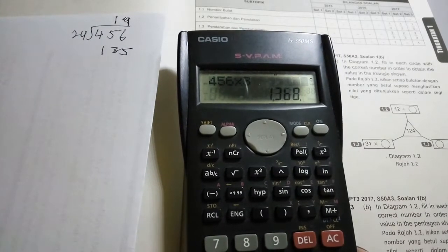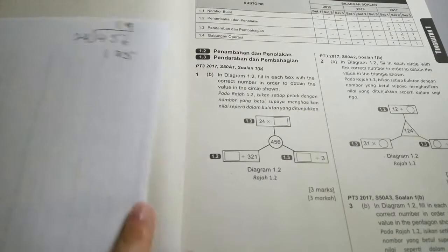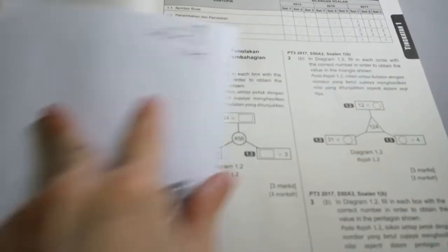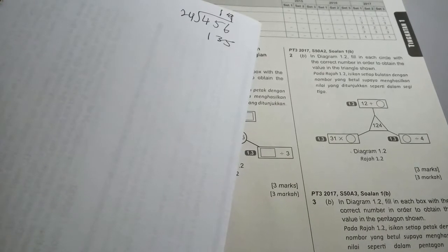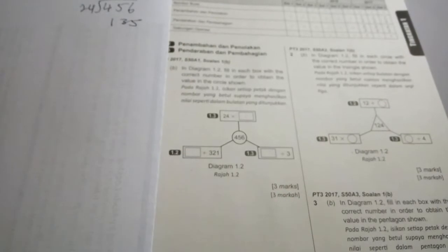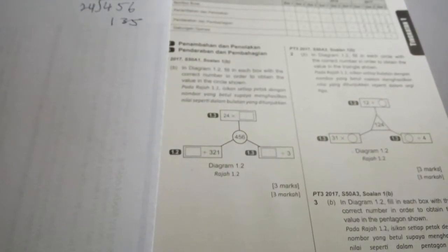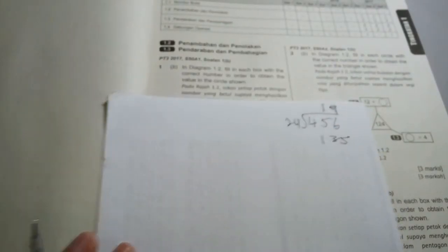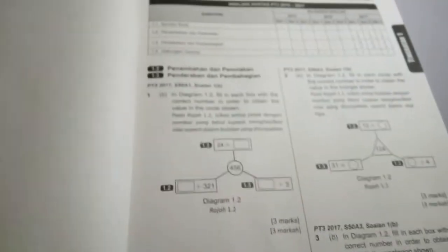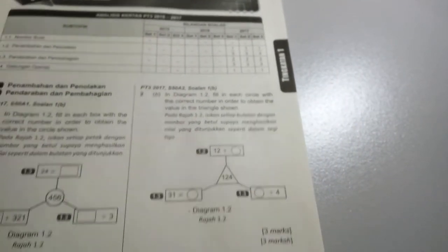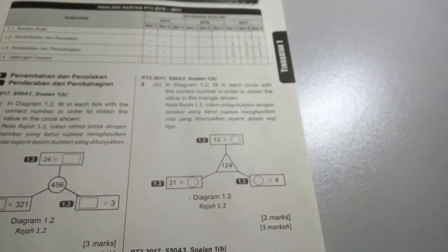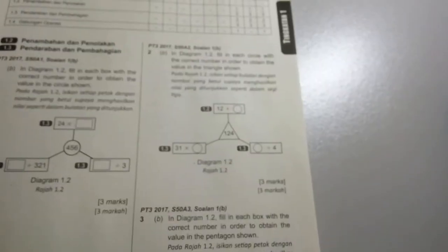1,368. So that's the answer right there — all done. Pretty easy. All you need to do is press the digits into the calculator. The real test is whether you understand how to basically work it in reverse. Alright then, now for question 2. In Diagram 1.2, fill in each circle with the correct number in order to obtain the value in the triangle shown.